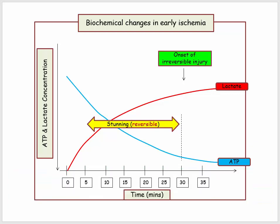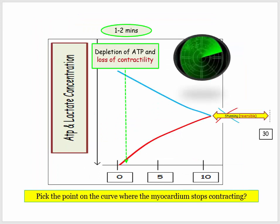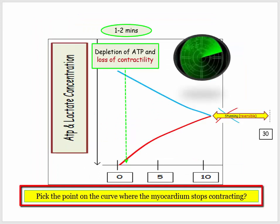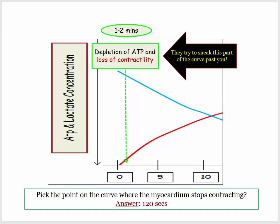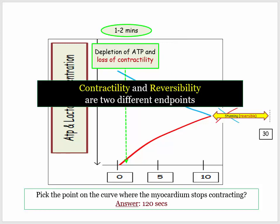Getting back to business: we see the onset of irreversible injury at 30 minutes, but here's a great and tricky derivative. Pick the point on the curve where the myocardium stops contracting. Answer: 120 seconds. The ATP-dependent pump stopped working and the myocyte experiences loss of contractility. The purpose of this question is to test your understanding of contractility versus reversibility — tricky and subtle, but a valid teaching point nonetheless.